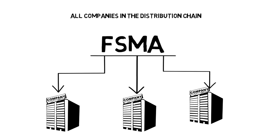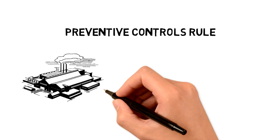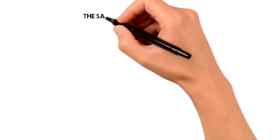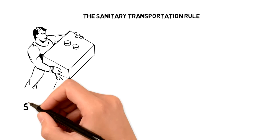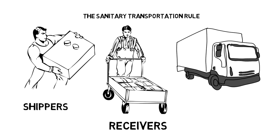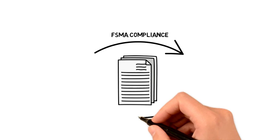For instance, under the preventive controls rule, a manufacturing facility is not required to implement a preventive control for an identified hazard if the company relies on its customer or a subsequent entity in the distribution chain to control that hazard, and certain other requirements are met. As another example, while the sanitary transportation rule applies across the chain of food transportation, which means that shippers, receivers, carriers, and loaders are subject to the rule, responsibility for certain obligations can be shifted among the parties by written agreement. But the fact that responsibility for FSMA compliance can be shifted does not necessarily mean that the shifting party is absolved of all possible litigation liability.